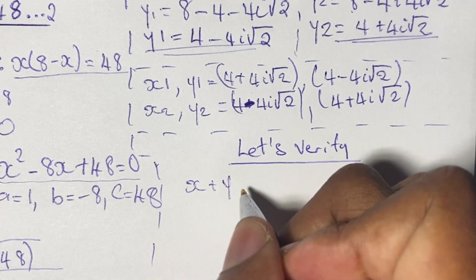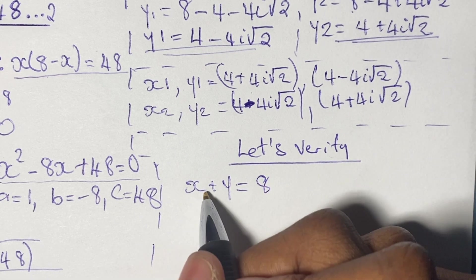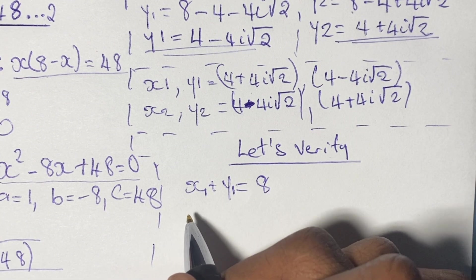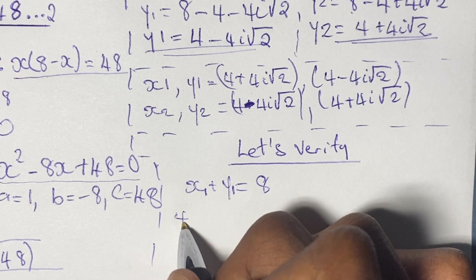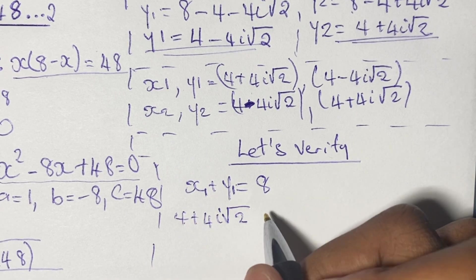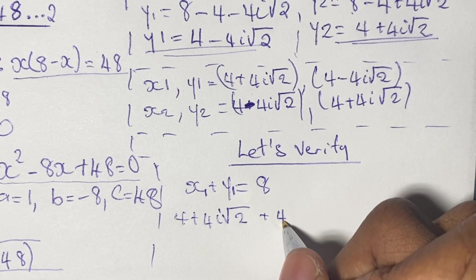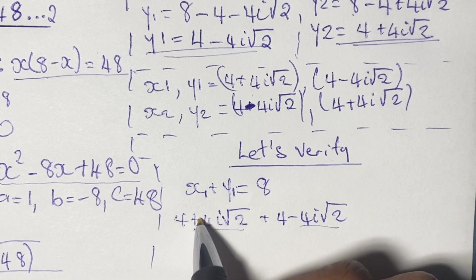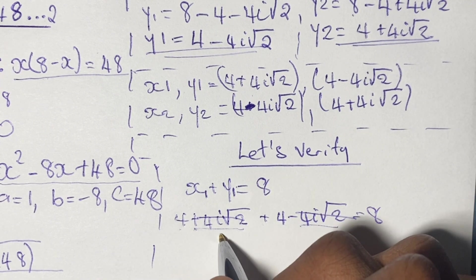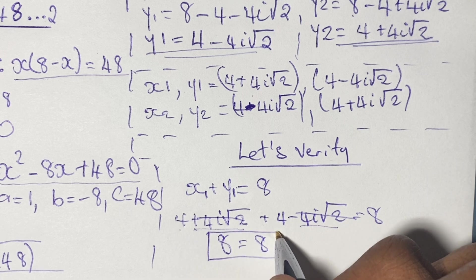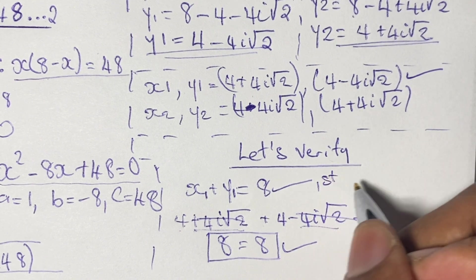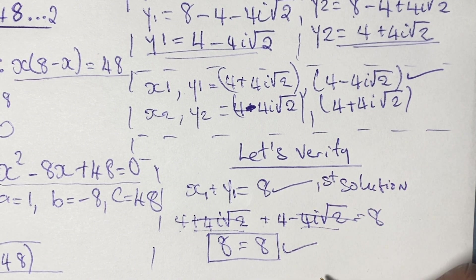We verify our solutions using equation 1 (x plus y equals 8) and equation 2. Starting with the first pair: x1 plus y1 equals (4 plus 4i√2) plus (4 minus 4i√2). The imaginary terms cancel — one is positive, the other negative — leaving 4 plus 4, which equals 8. Our first pair of solutions is verified using equation 1.